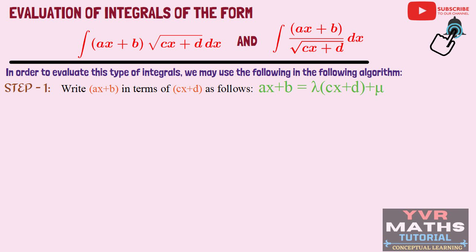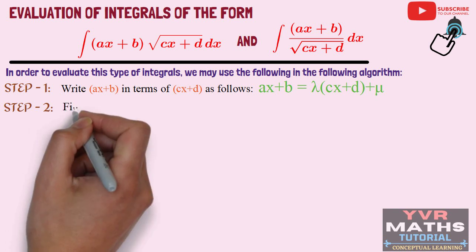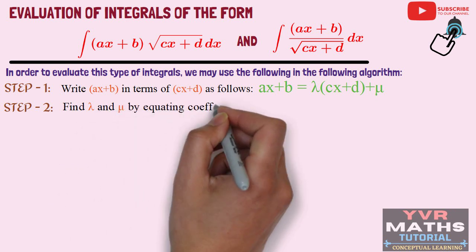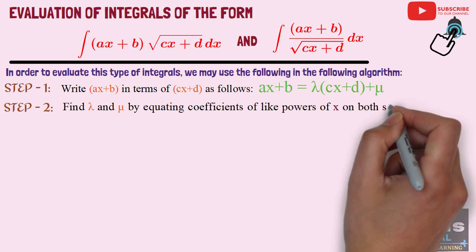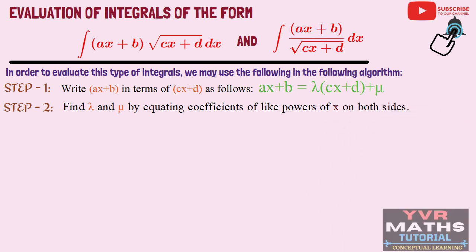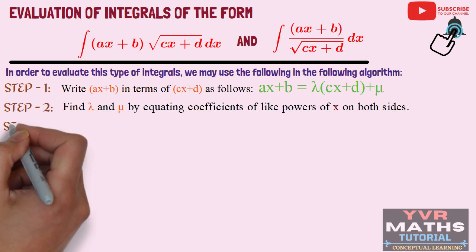In Step 2, we find the unknown values λ and μ by equating the coefficients of like powers of x from the equation discussed in Step 1, on both sides. Equating corresponding coefficients gives us the values of λ and μ. After finding them, we can express AX + B as λ(CX + D) + μ and proceed to Step 3.